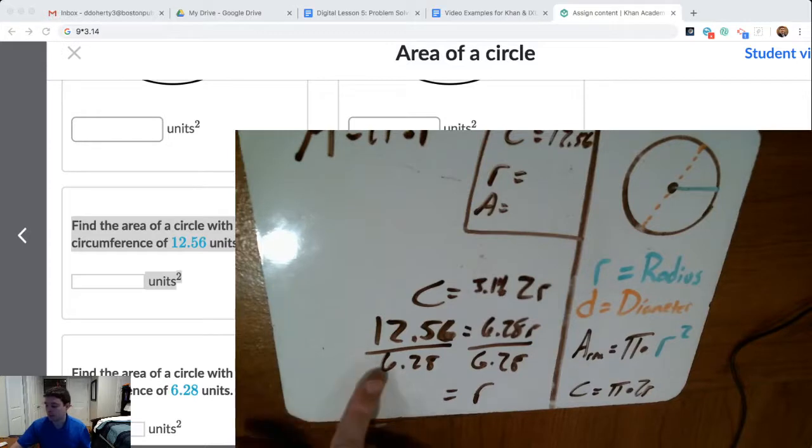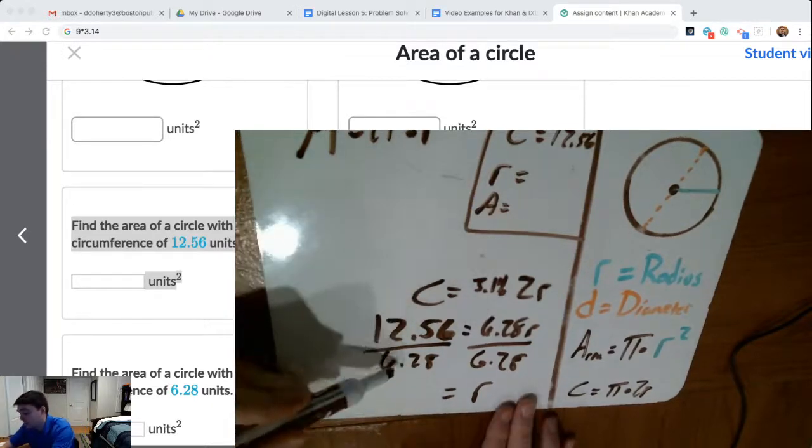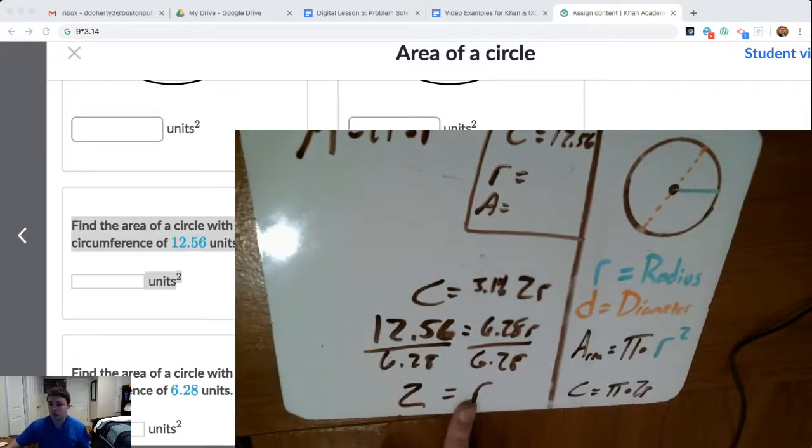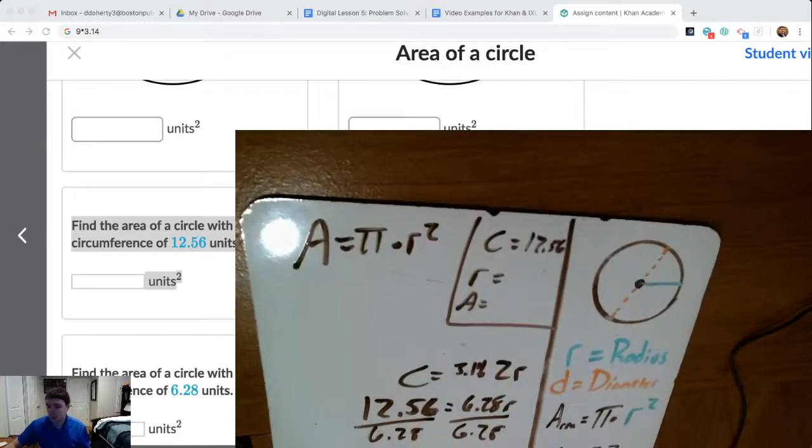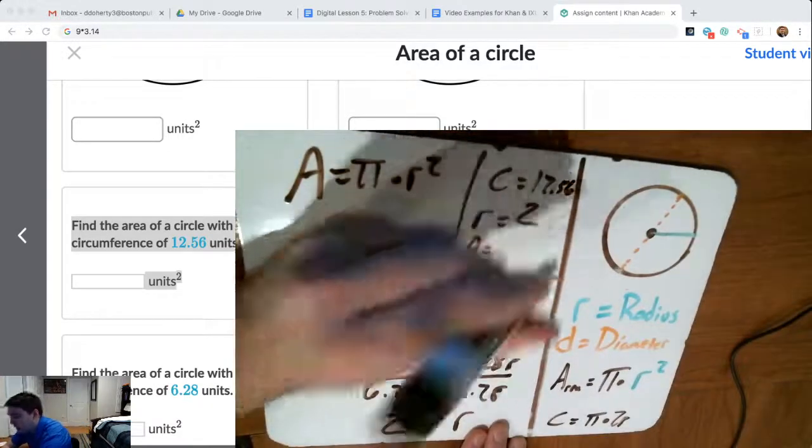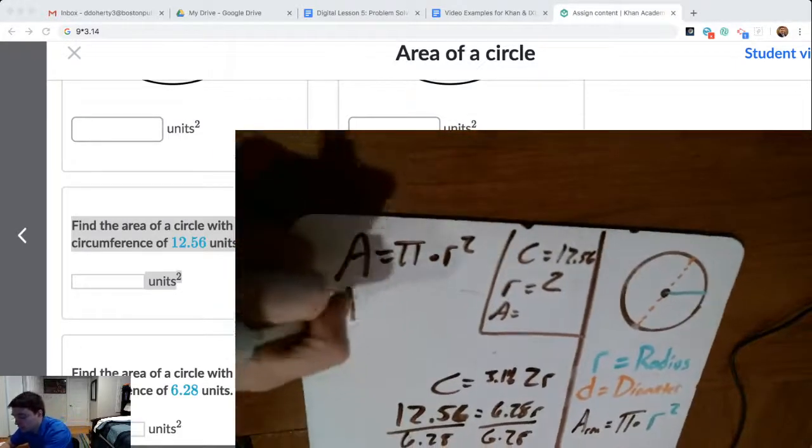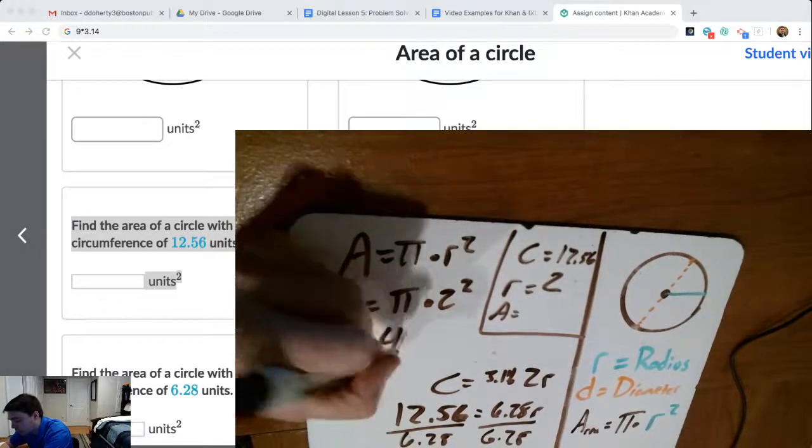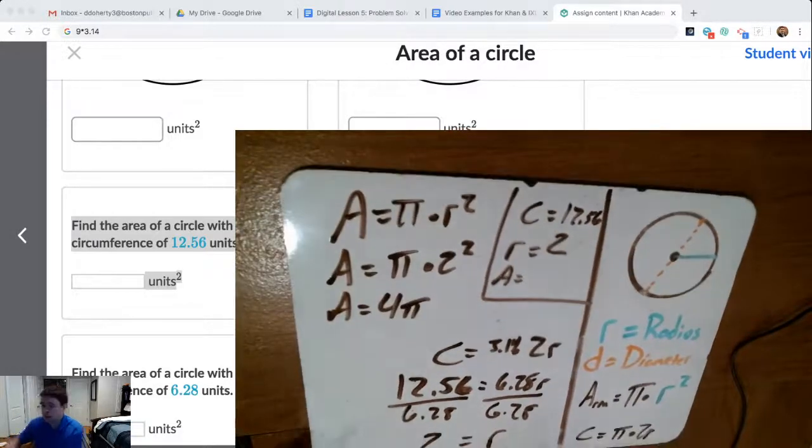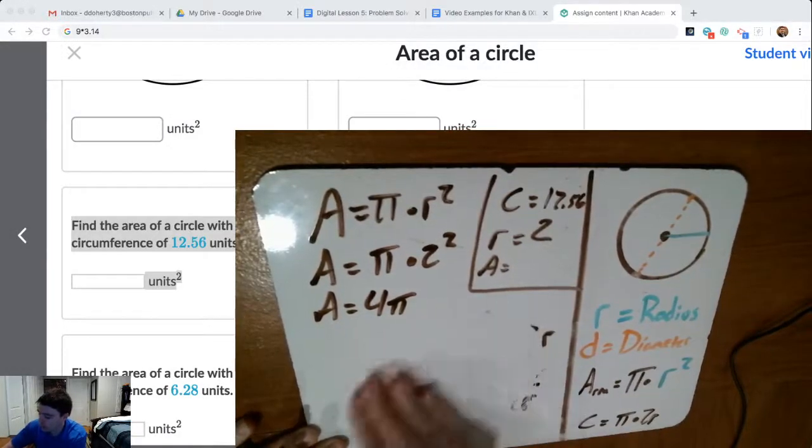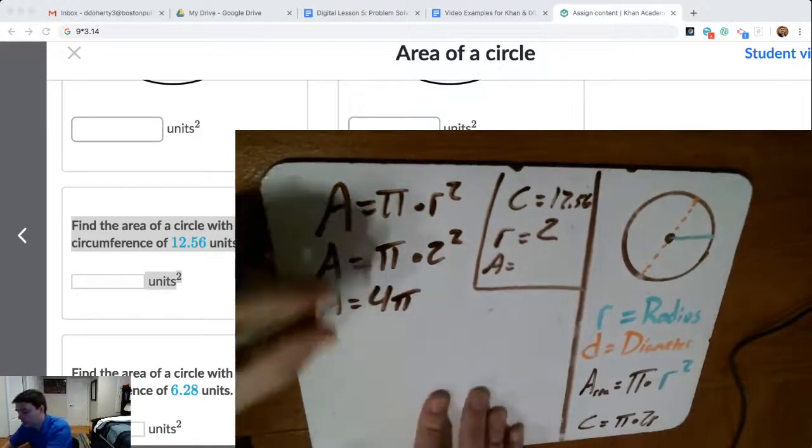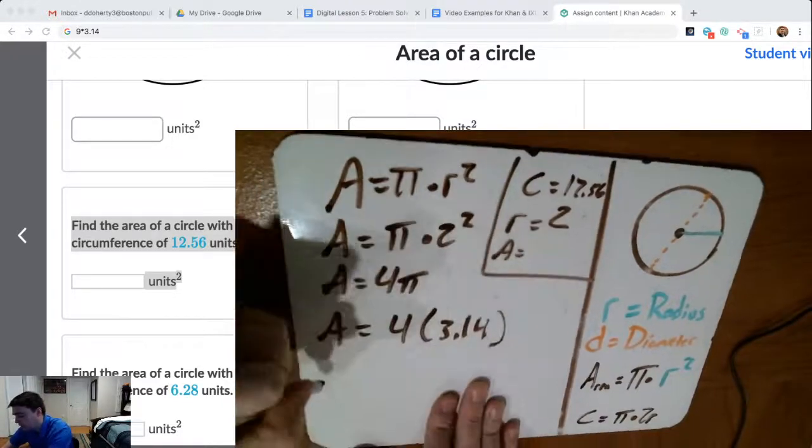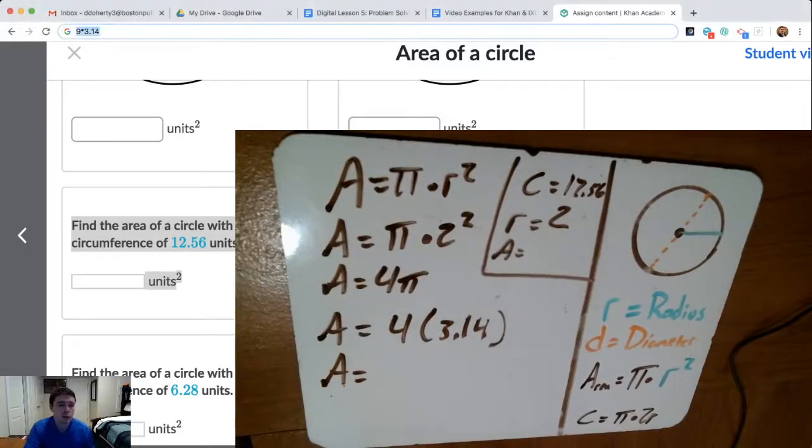When I do 12.56 divided by 6.28, you might have noticed already that's exactly double in the numerator as the denominator. This is going to give me a radius of exactly 2. Now once I know that the radius is 2, once I know the radius is 2 units, I can plug that 2 into my area formula. The area formula becomes pi times 2 squared. Or the area formula becomes 2 squared is 4, so it becomes 4 times pi. So now that I've worked out the radius of that circle based on the circumference, the area is pretty straightforward, whatever 4 times 3.14 is, because that's what we're using for pi. That's the area of our circle. So we do 4 times 3.14. We get 12.56.